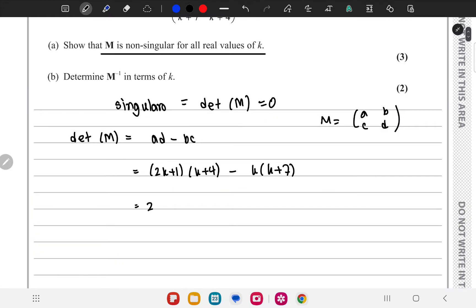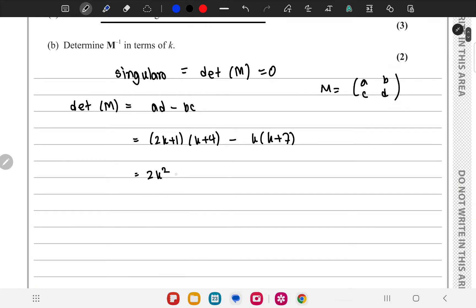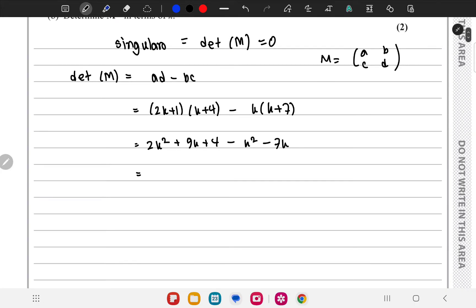So 2K square plus 8K plus K, so plus 9K plus 4 minus K square minus 7K. This is K square plus 2K plus 4.